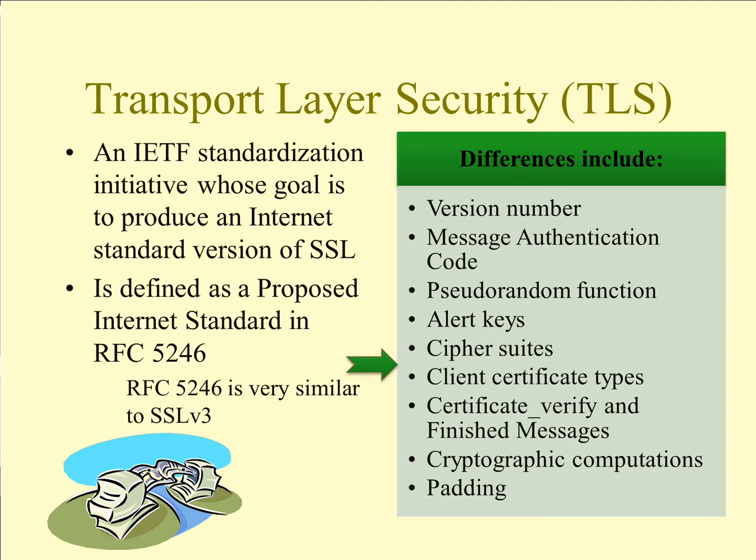The TLS record format is the same as that of the SSL record format, and the fields in the header have the same meanings. However, the version is going to be different. For the current version of TLS, the major version is 3 and the minor version is also 3, whereas with SSL, the major version is 3 with the minor version being 0. Regarding the message authentication code, TLS uses the HMAC algorithm, defined in RFC 2104, and SSL does not utilize that.